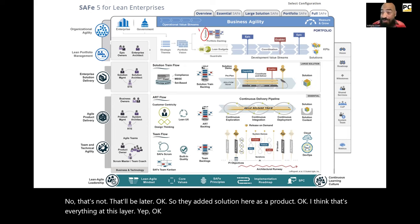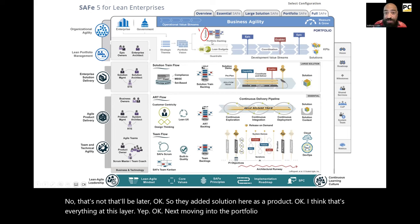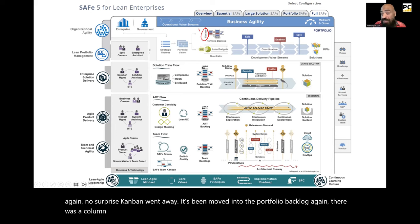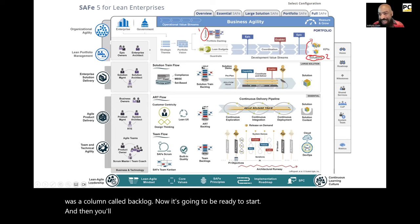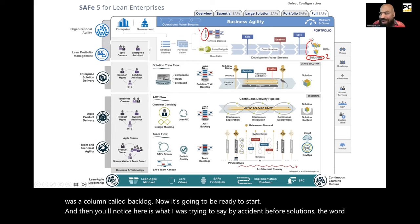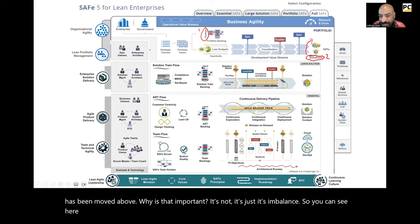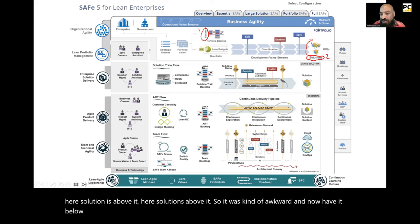Moving into the portfolio layer — what changed? Once again, no surprise, Kanban went away. It's been moved into the portfolio backlog. There was a column called 'backlog'; now it's going to be 'ready to start.' And you'll notice here the word 'solutions' has been moved above — it was kind of imbalanced. So at the essential layer, 'solutions' is above it; at the portfolio layer it should be the same. So they moved that to the top.